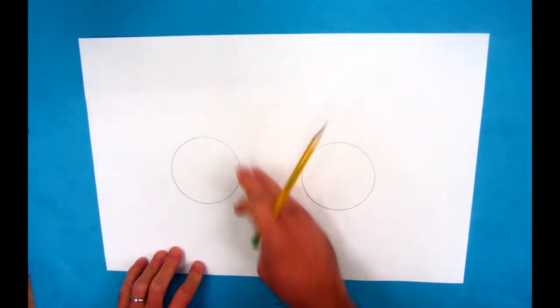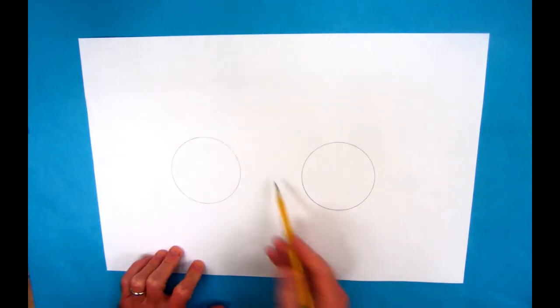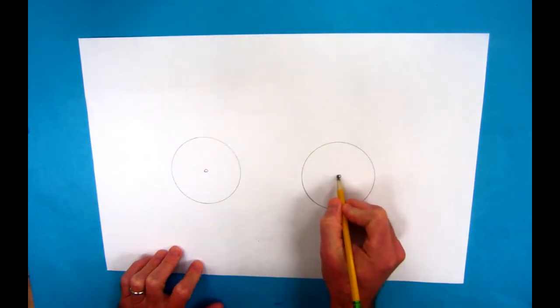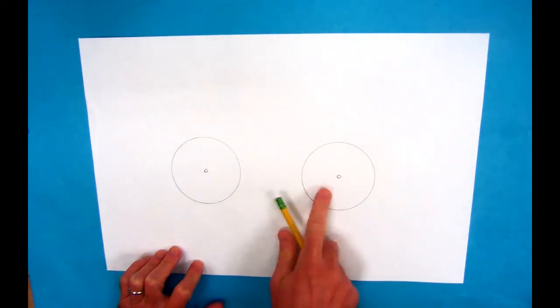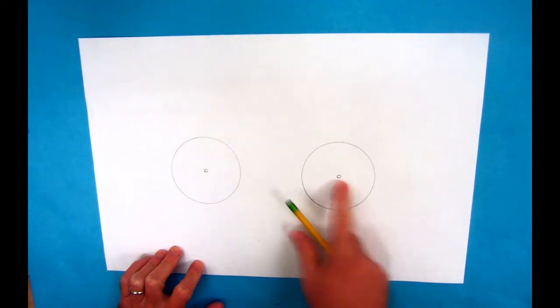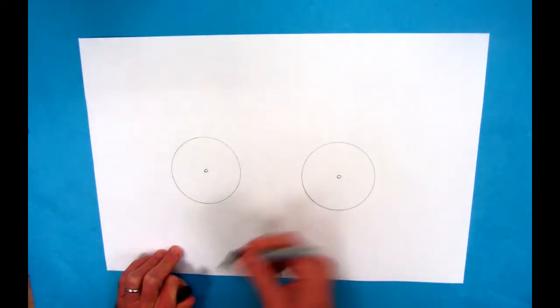After that, you have to find the centers of those two circles, and those are called your hubs. Now I'm going to move on to marker so that you can see it.